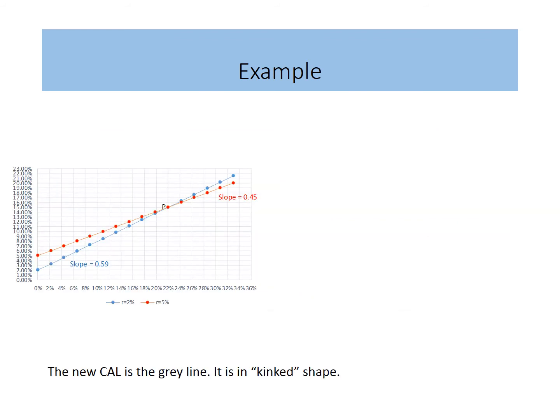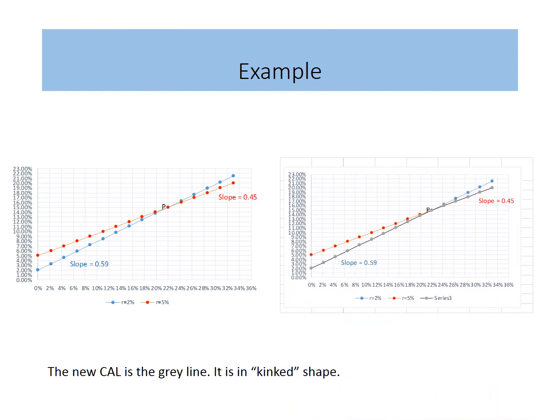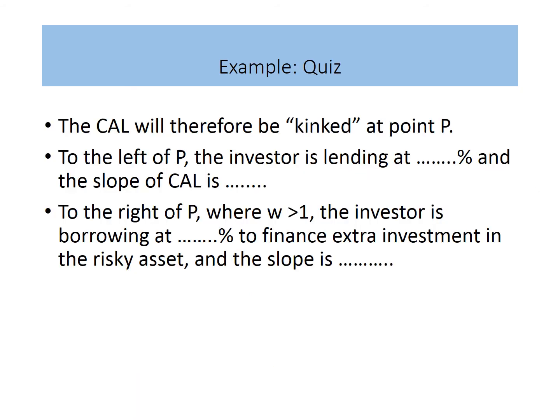I have drawn a new graph from the original. This graph shows the effect of combining the different lending and borrowing lines. Here, the CAL is shown in gray color. It is no longer a straight line — it is kinked in shape. The slope of the line changes at point P. Let's have a quick quiz to test your understanding: the CAL will therefore be kinked at point P. What is your answer?